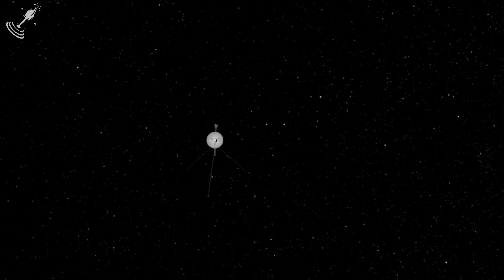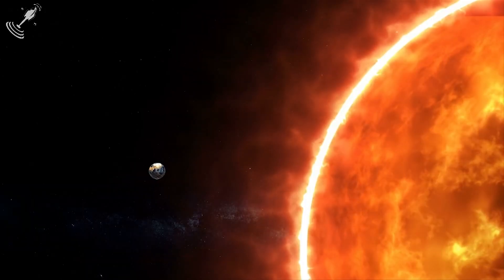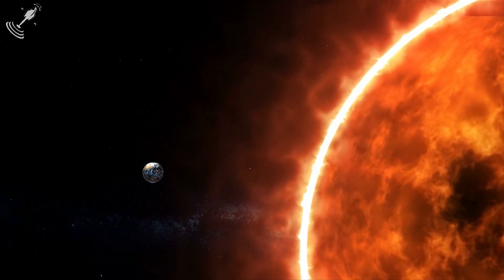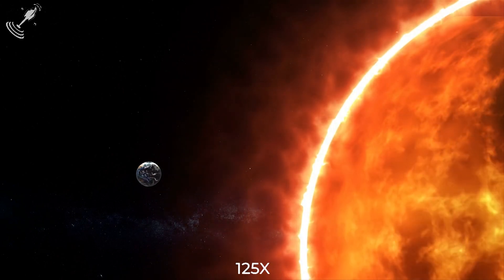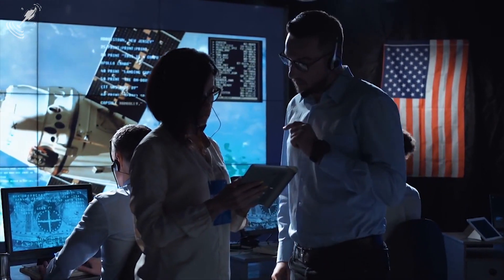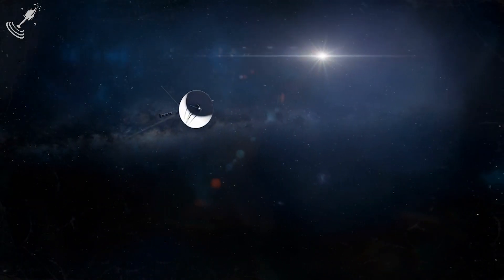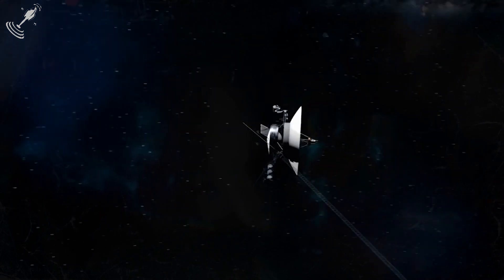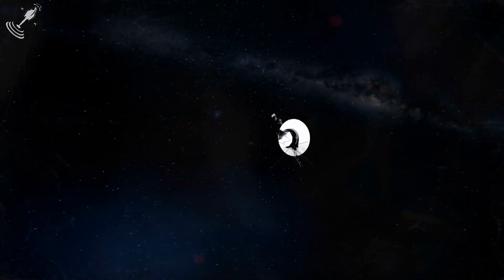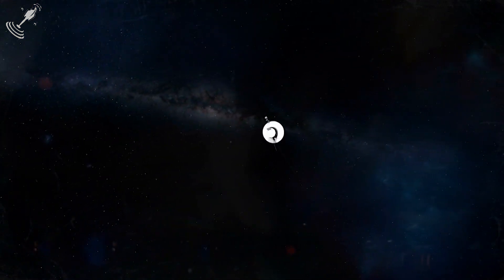At present, Voyager 1 is extremely far away, at a distance of about 125 times the separation between the Earth and the Sun. Therefore, both the probe and each of the researchers face two problems: the depletion of the system's energy supply and the weakening of the radio signal as it moves farther and farther away from planet Earth.